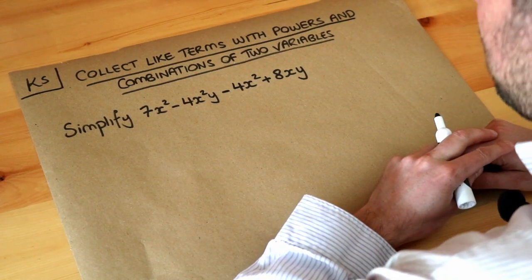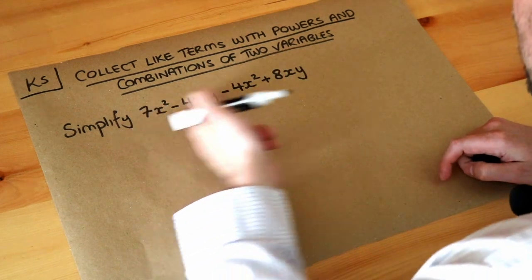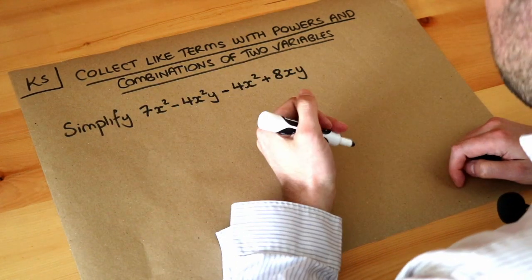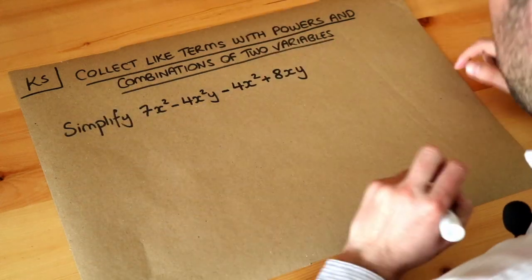In previous videos we saw that collecting like terms is just to simplify an algebraic expression where we're adding and subtracting by finding what terms are similar and then being able to combine them together.